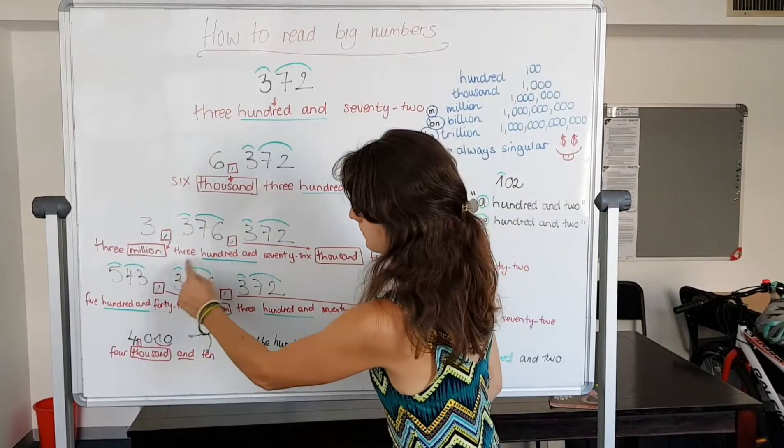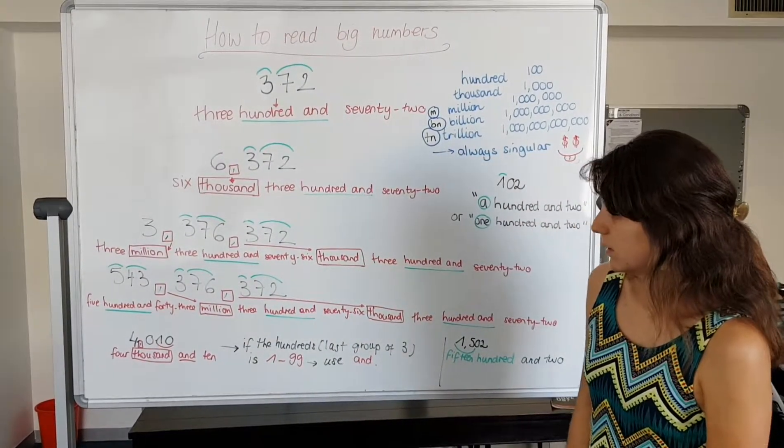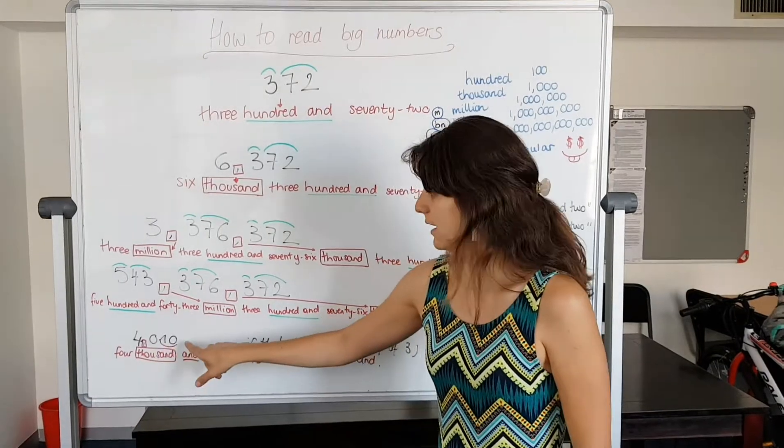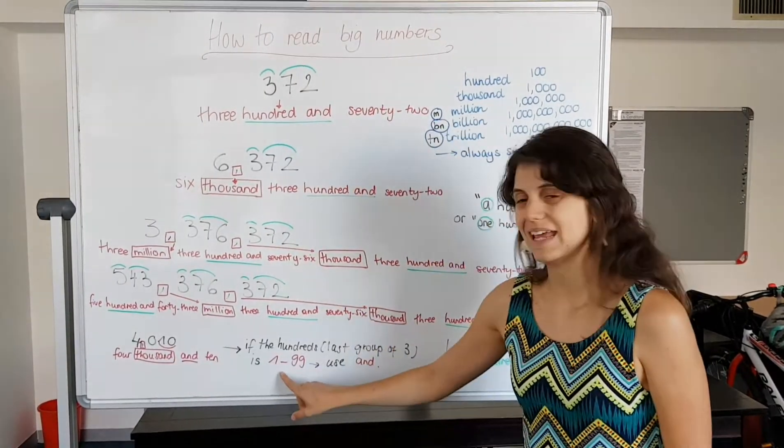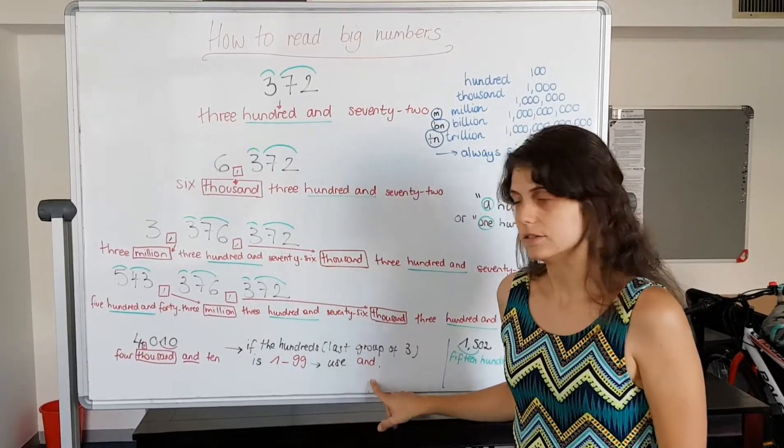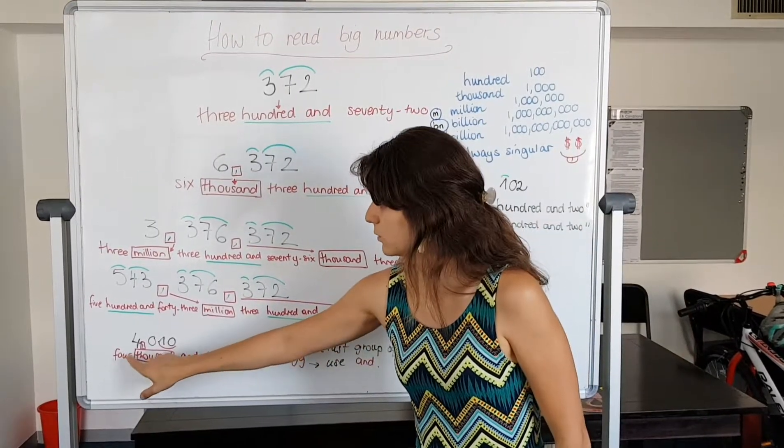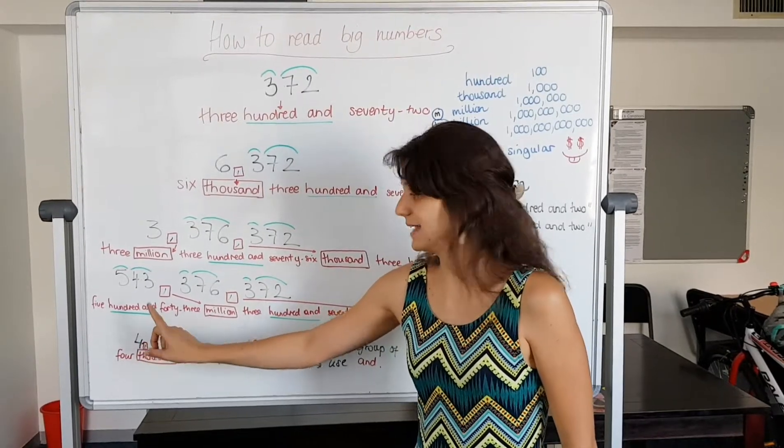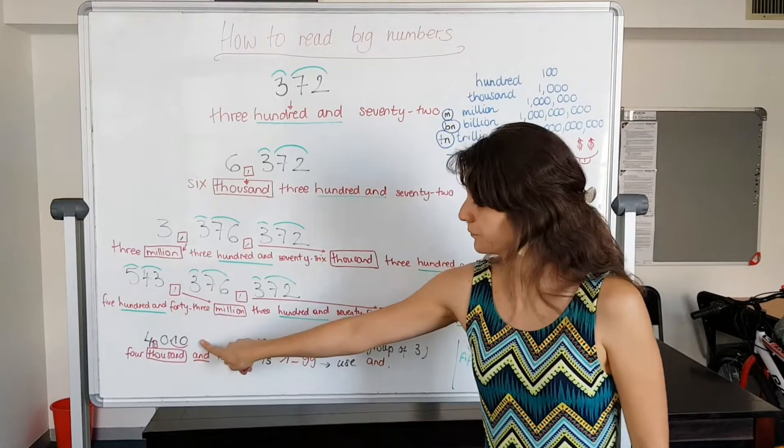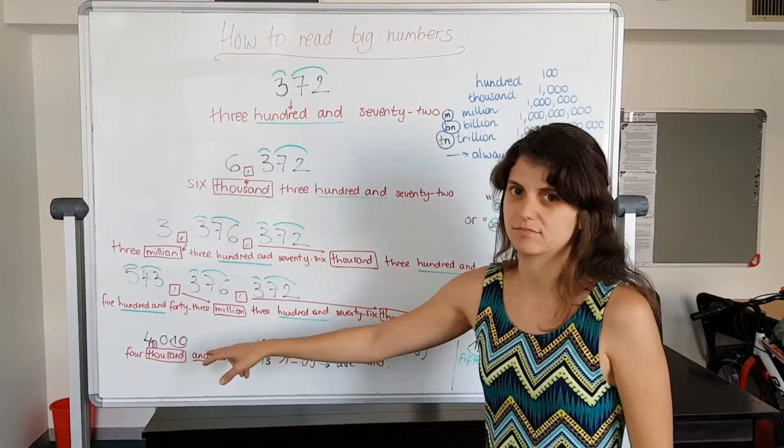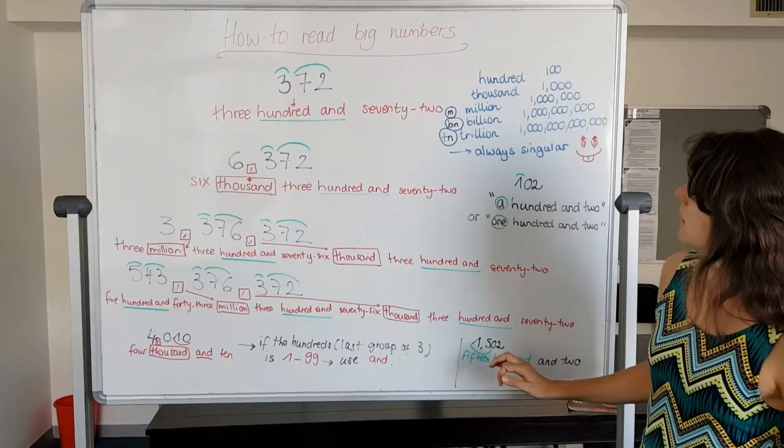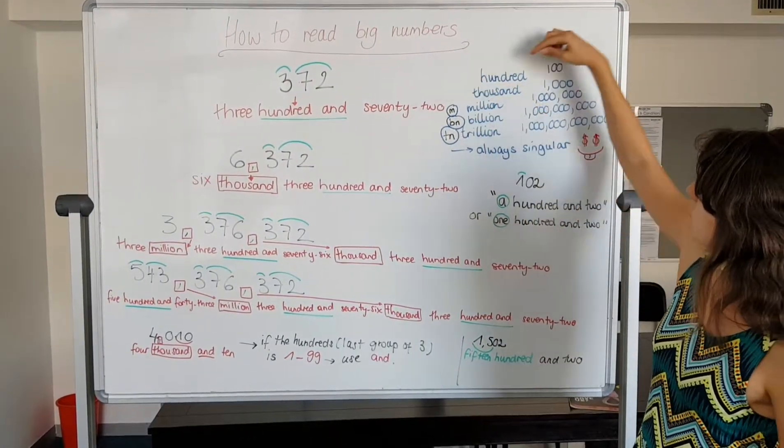Now if I've got in the hundreds, if I only have a number between one and ninety-nine, for example ten, I will use 'and.' So for example, we say four thousand and ten, four thousand and ten, not just four thousand ten. Better say four thousand and ten.